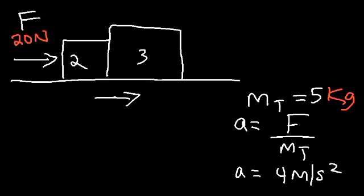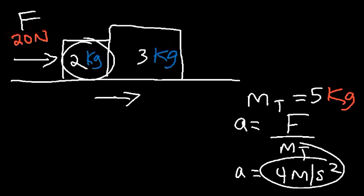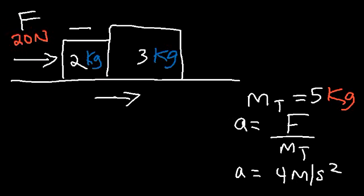Both blocks will move at the same acceleration. So what is the net force on the two-kilogram block, and what is the net force on the three-kilogram block? The two-kilogram block moves at an acceleration of 4, so 2 times 4 is 8 — the net force on the two-kilogram block is 8 newtons. The net force on the three-kilogram block is 3 times 4, which is 12 newtons.